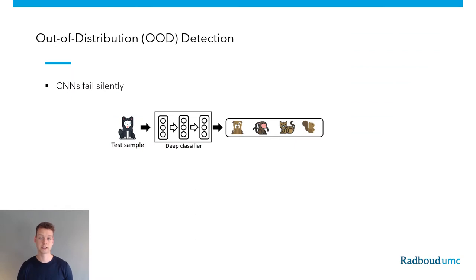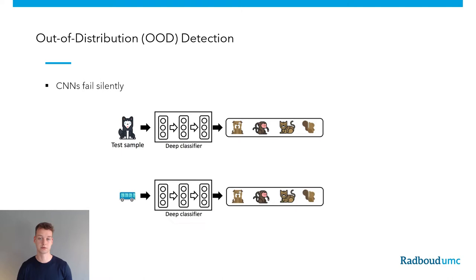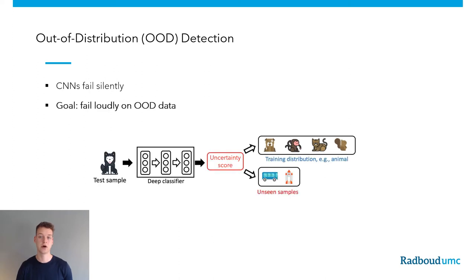Let's say we've trained a model to classify images belonging to a specific animal class. If we then give this model out-of-distribution data, such as a class it has never seen before or during training, it will still predict an animal class. In that sense, this model is failing silently. On medical data, this can have big consequences, therefore we would like our model not to fail silently but to fail loudly on out-of-distribution data, for instance by giving an uncertainty score.